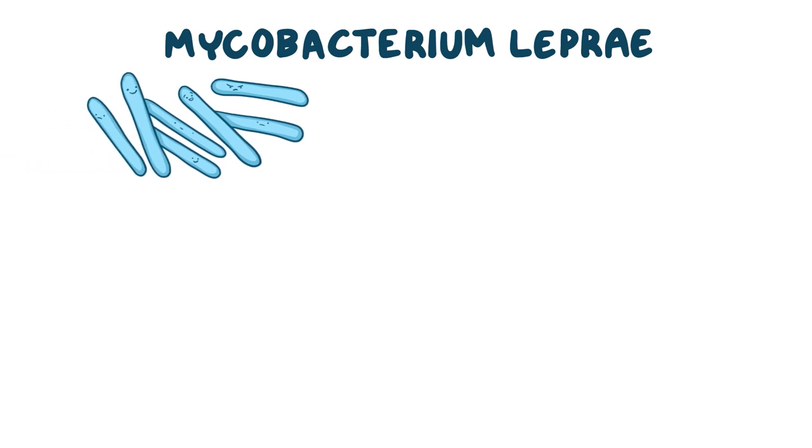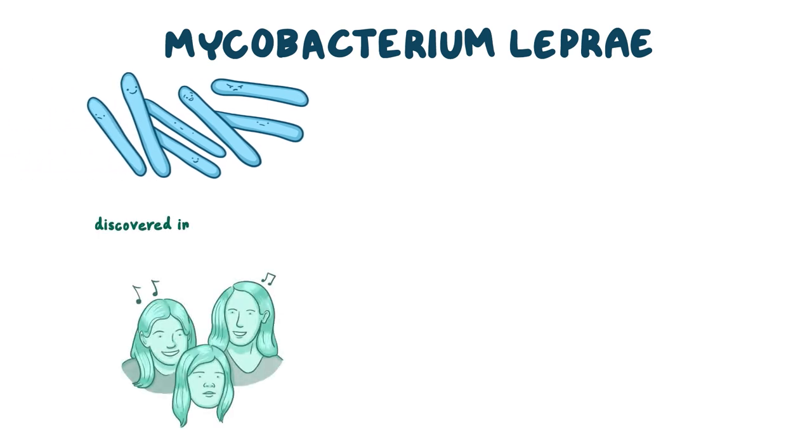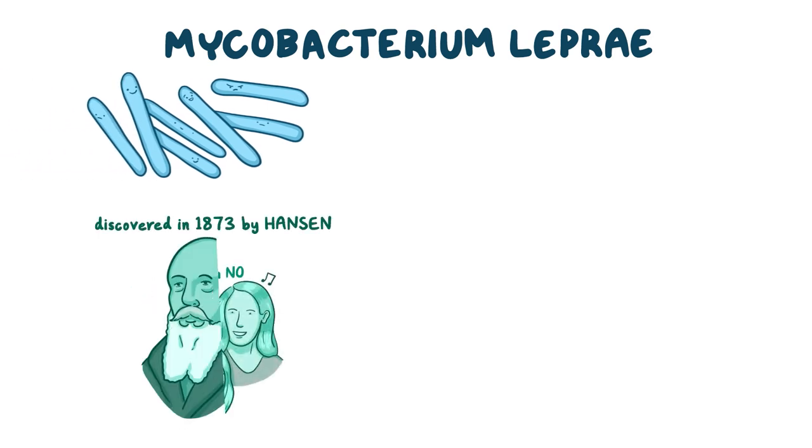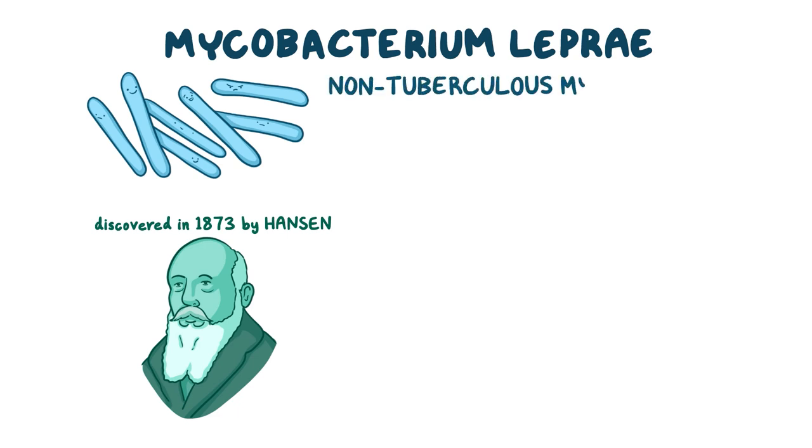Mycobacterium leprae is a rod-shaped bacteria which was first discovered in 1873 by Hansen. Mycobacterium leprae is a non-tuberculosis mycobacteria, and it causes a disease called leprosy or Hansen disease.